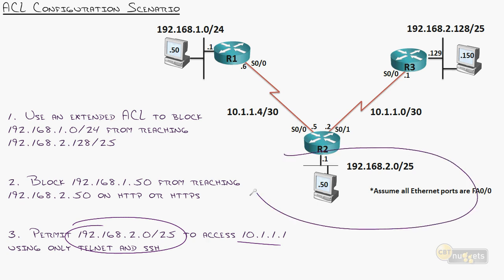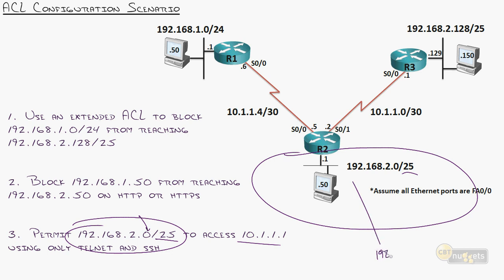So I'm saying permit this whole subnet — 192.168.2.0/25, which is 192.168.2.0 through .127. That whole subnet can access 10.1.1.1 only using telnet and SSH. The most efficient placement, close to the source, is Router 2. I'll go into Router 2.